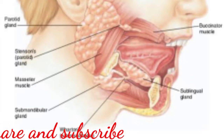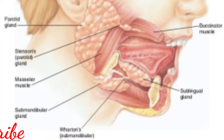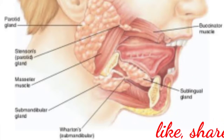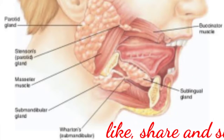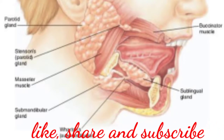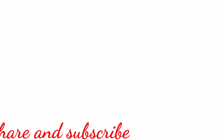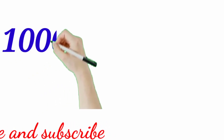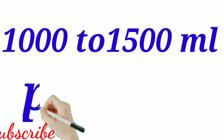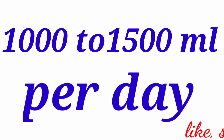These glands have ducts such as Stensen's duct, Wharton's duct, and Bartholin's duct. The salivary juice secreted by the salivary glands reaches the mouth through these ducts. The daily secretion of saliva ranges from 1000 to 1500 ml.